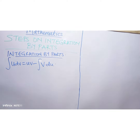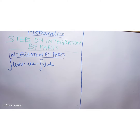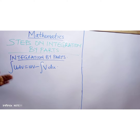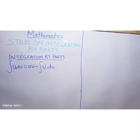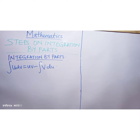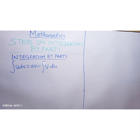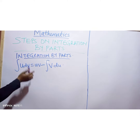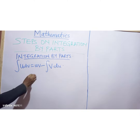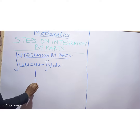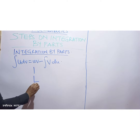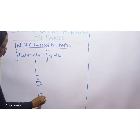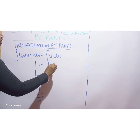The problem or issue that students usually have is: which one do I take as my u, and which one do I take as my dv? You do not have to bother — what you need to do is follow this acronym: ILACE, where I stands for inverse...